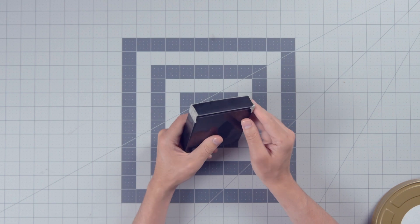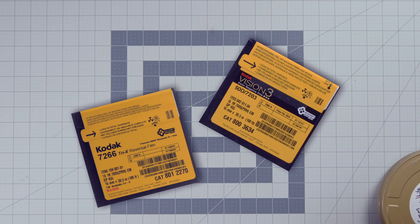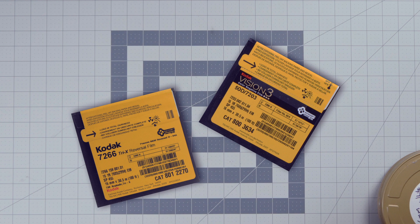16mm film usually comes in two lengths: 100 feet of film and 400 feet of film. 100 feet of 16mm looks like this. It's the little boxes, and it probably says load in subdued light or complete darkness, but don't worry, you don't need to do this in a darkroom.